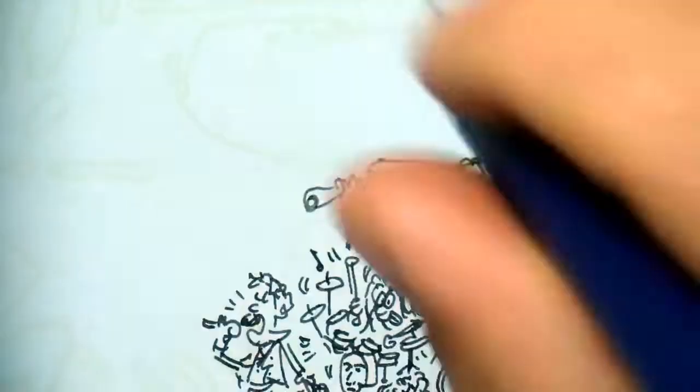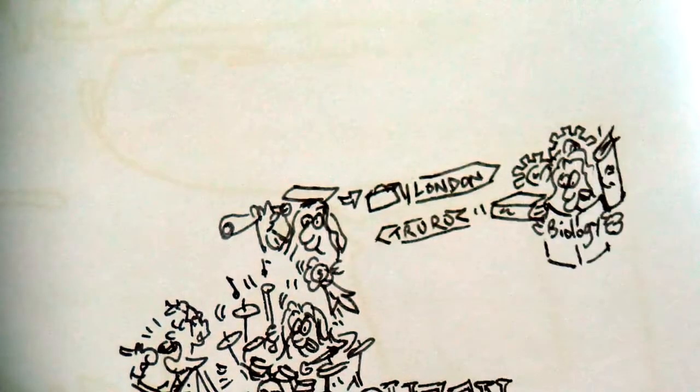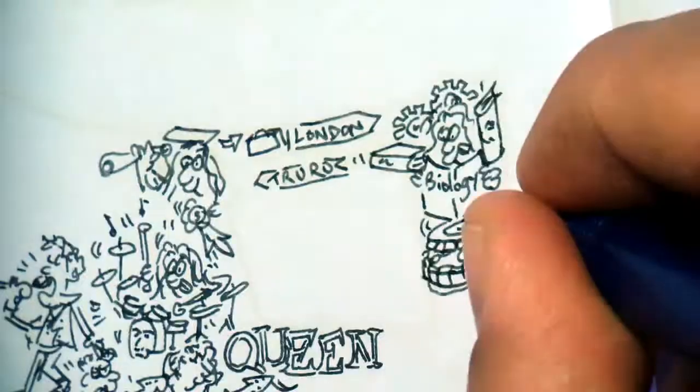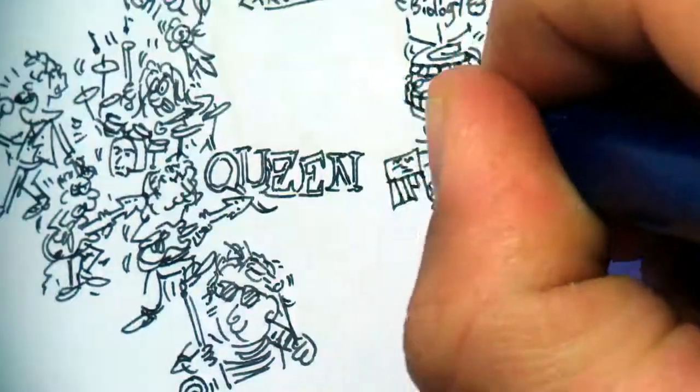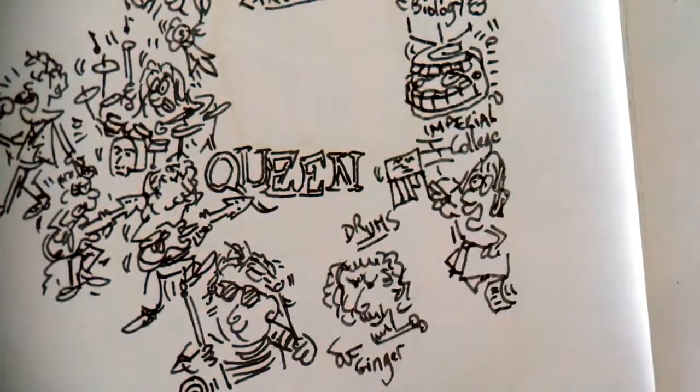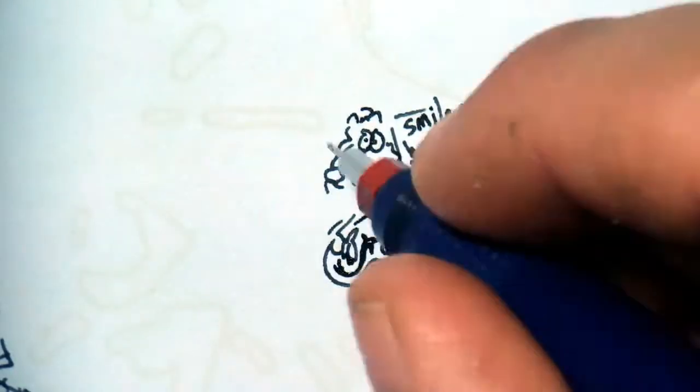Brilliant student, Roger leaves the countryside to study biology in London to become a dentist. Between two lessons at the Imperial College, he sees an ad from a group looking for a drummer with the influences of Ginger Baker or Mitch Mitchell. Roger applies and arrives at the audition of band Smile.